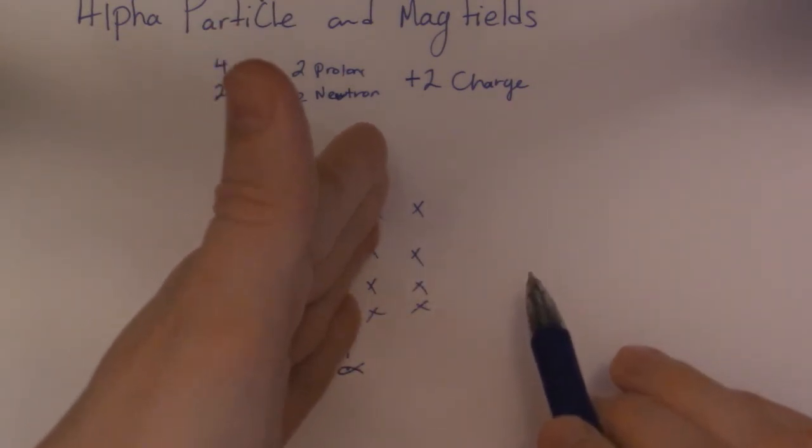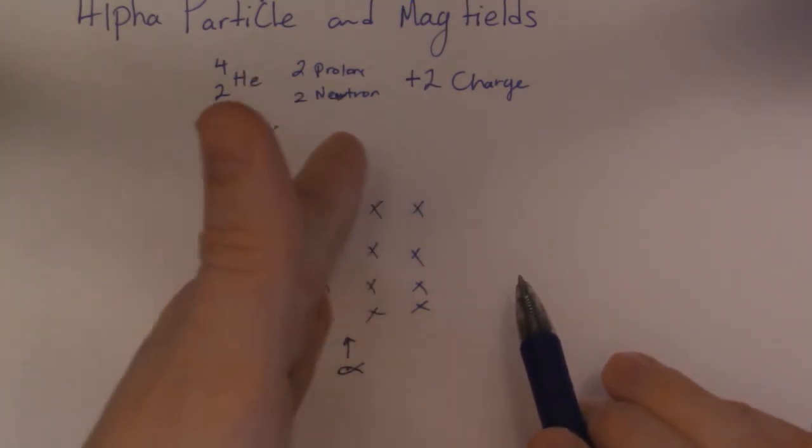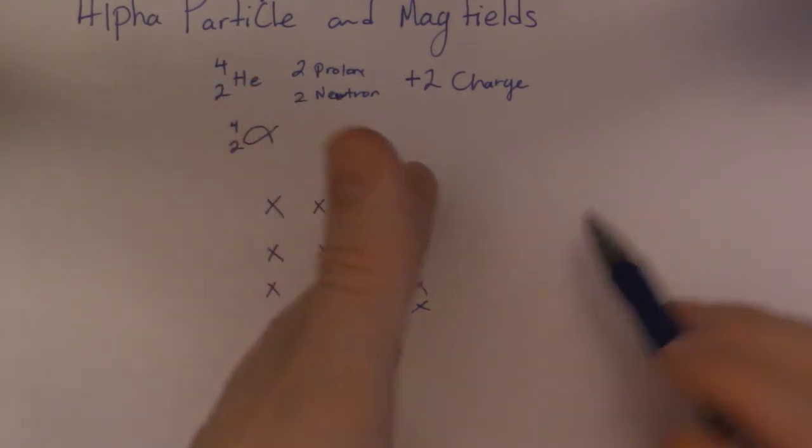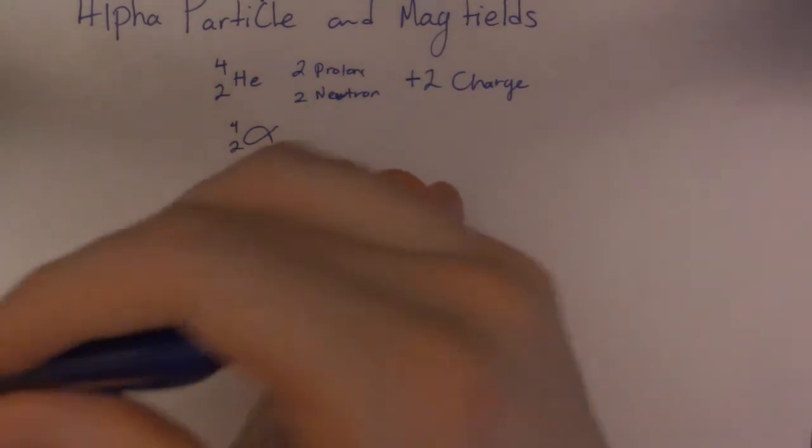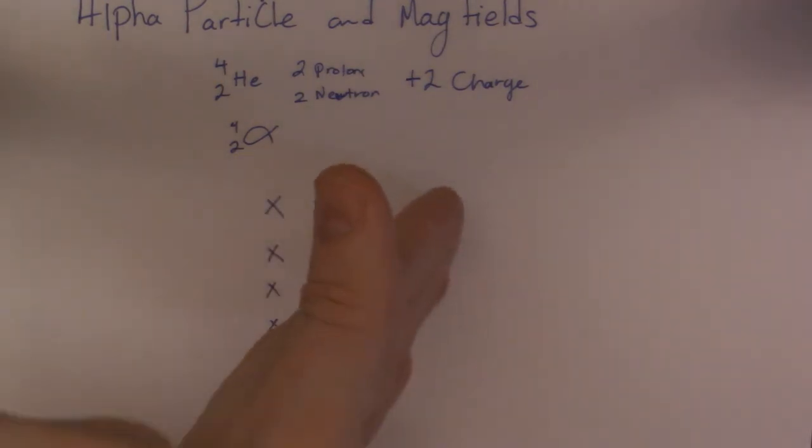Beta particles have a negative charge. Where a proton does the opposite of what an electron is going to do. So an electron is going to be like the back of my hand. And it's actually going to go to the left.